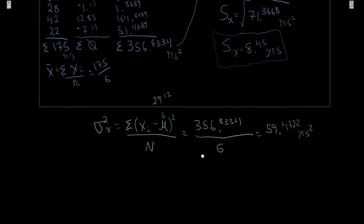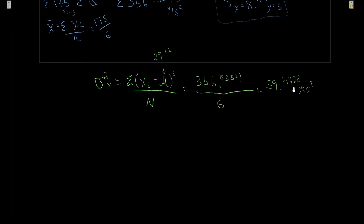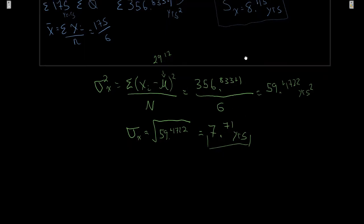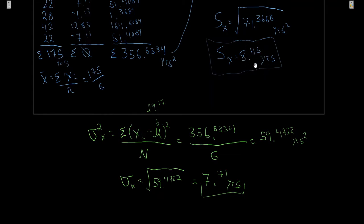Just like before, we convert to standard deviation by taking the square root of 59.4722, giving us 7.71 years. So if this was a population data set, the standard deviation is 7.71 years, versus 8.45 years for the sample. That's almost a full year difference based solely on whether it's a sample or a population — quite a difference.